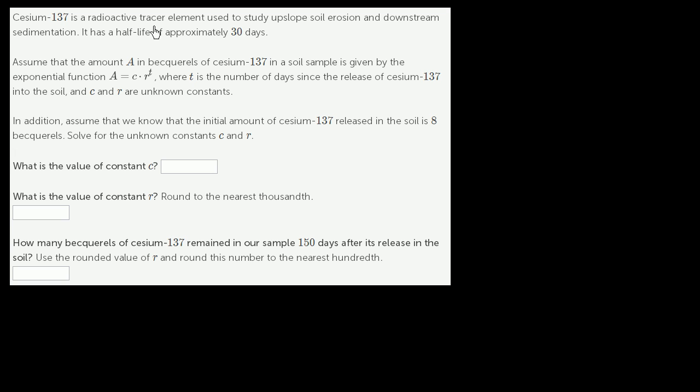Cesium-137 is a radioactive tracer element used to study upslope soil erosion and downstream sedimentation. It has a half-life of approximately 30 days.